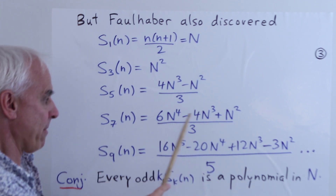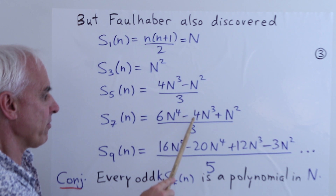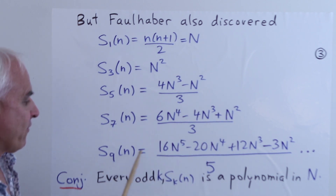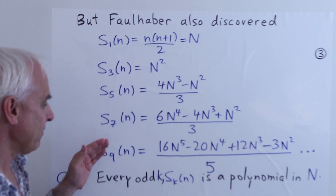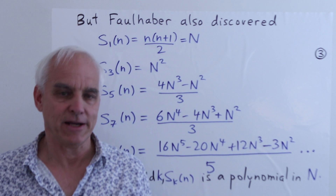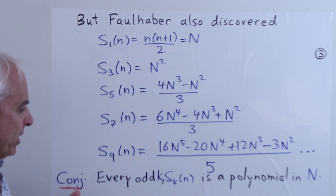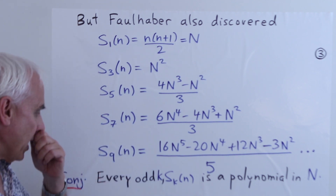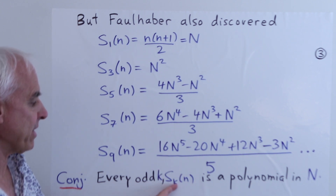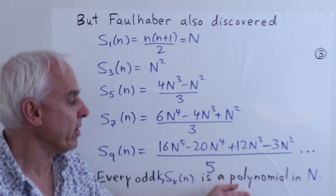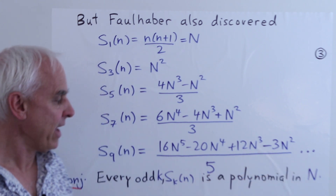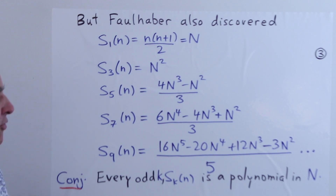S_5(n) can be rewritten in terms of capital N as (4N³ − N²)/3. S_7(n) can be expressed as 6N⁴ − 4N³ + N²/3. He verified this pattern up to S_17, leading to the natural conjecture that for every odd k, the Faulhaber polynomial S_k(n) is actually a polynomial in capital N — and that has been subsequently proved.